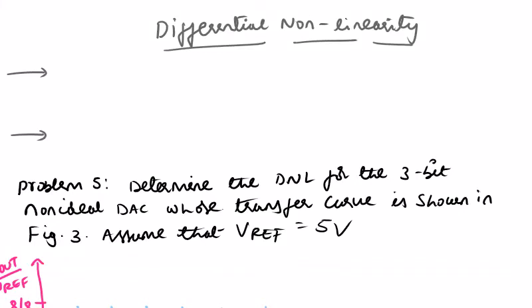In the introduction to DAC video, I gave an introduction, but a very important concept is differential non-linearity and integral non-linearity. What do we mean by differential non-linearity? The non-ideal components cause the analog increments to differ from their ideal values. The difference between the ideal and non-ideal values is known as differential non-linearity.